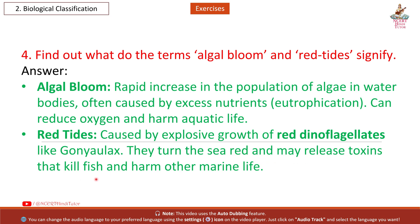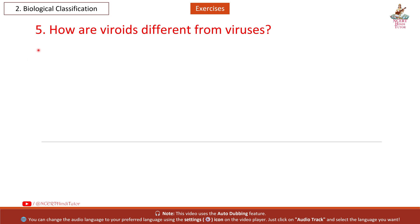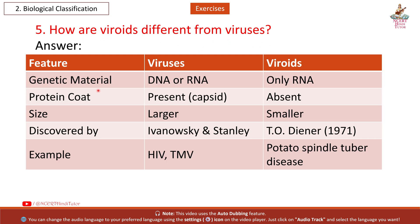Red tides are caused by explosive growth of red dinoflagellates like Gonyaulax; they turn the sea red and may release toxins that kill fish and harm other marine life. Question 5: How are viroids different from viruses?